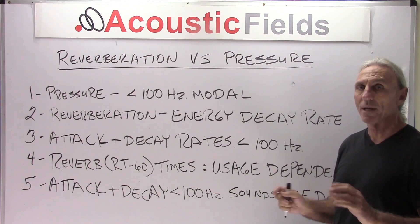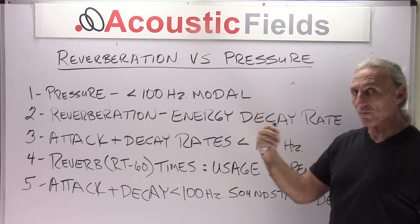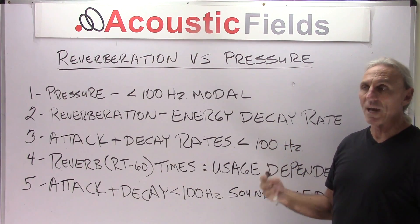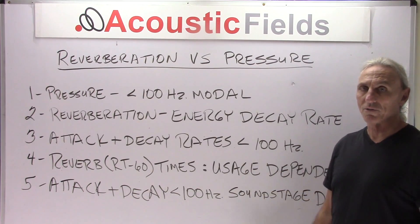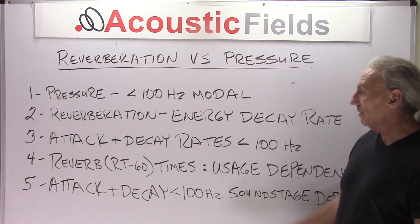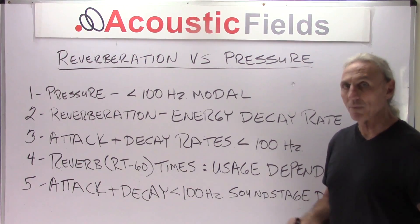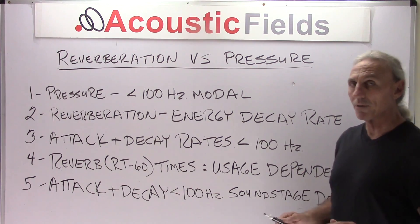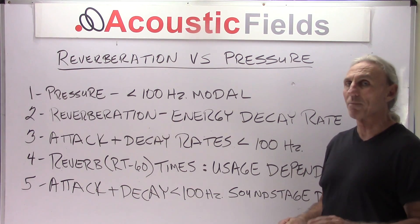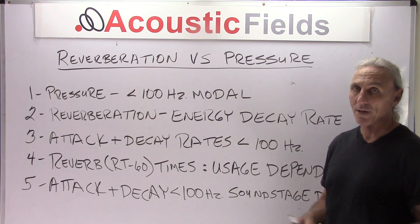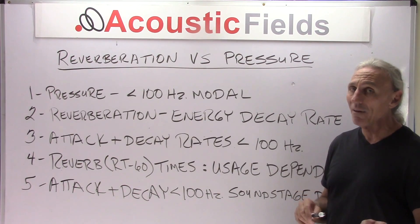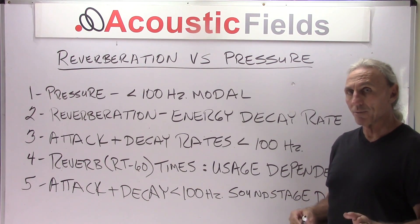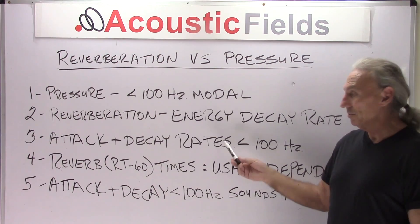You need a tight, defined low end in order for the mids to come through — it gives you a foundation and adds more dimension to the sound stage. So the attack and decay rates below 100 cycles in our rooms have to be managed correctly. Most products in the marketplace today cannot do that; they may have level but they don't have the rate of absorption necessary to achieve this.